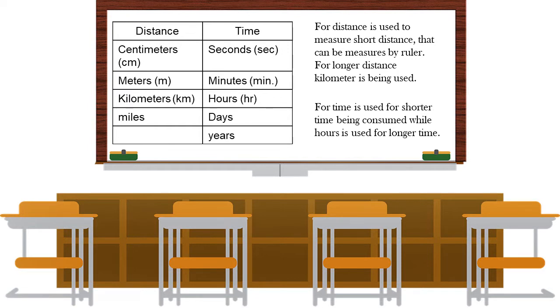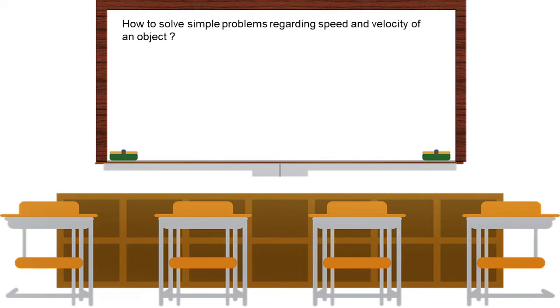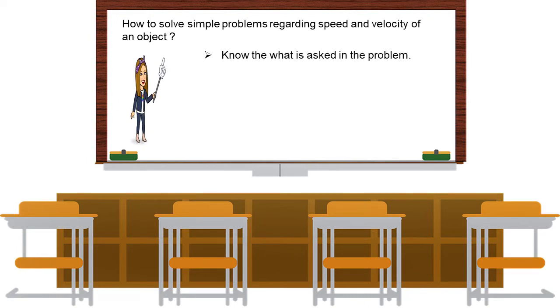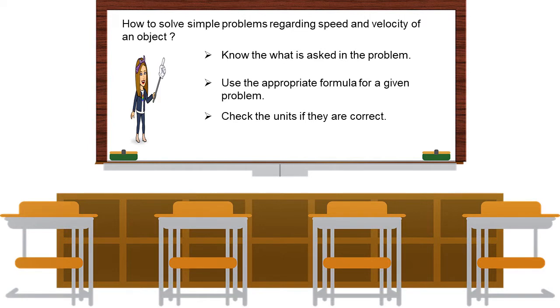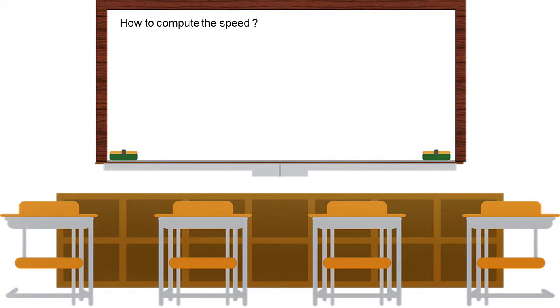Centimeters are used to measure short distances, while hours are used for longer time periods. To solve a simple problem regarding speed and velocity of an object: first, know what is asked in the problem; second, use the appropriate formula; and third, check the units to make sure they are correct.